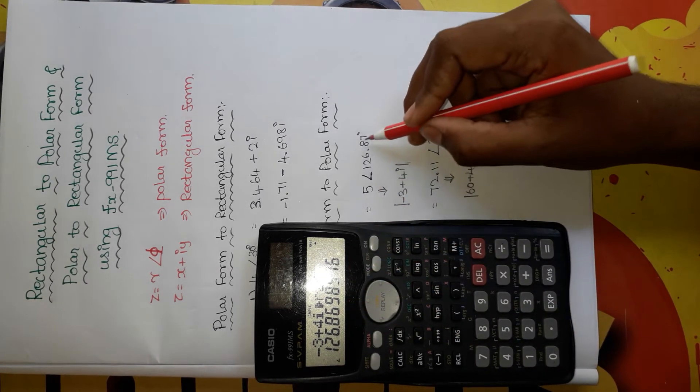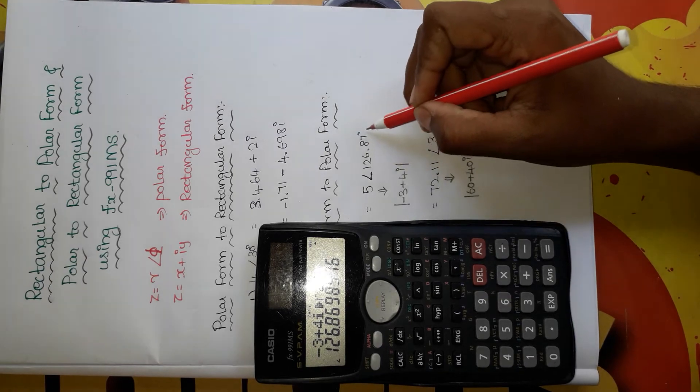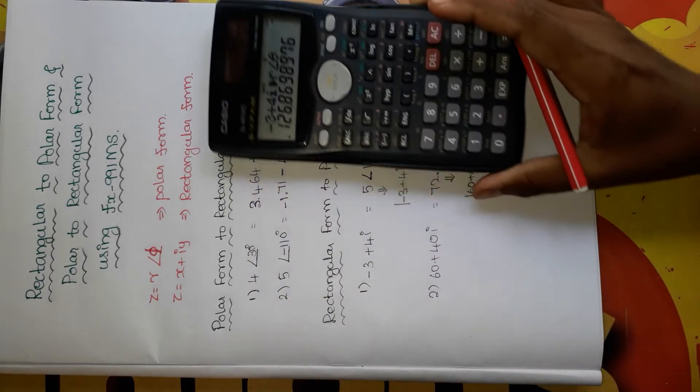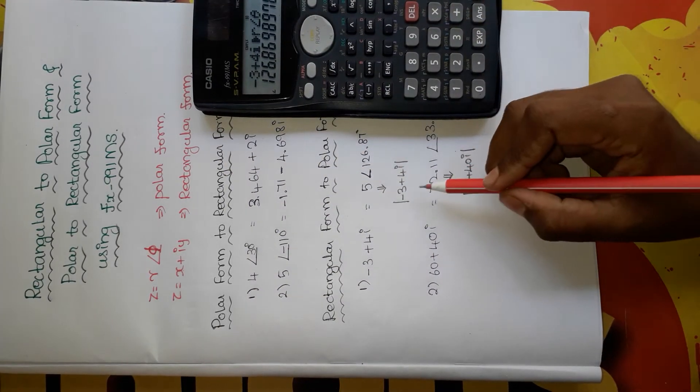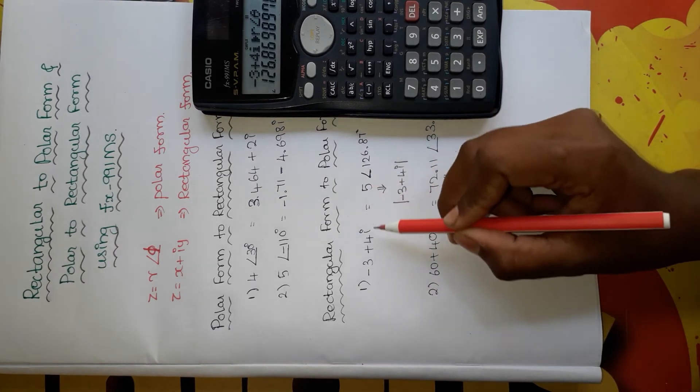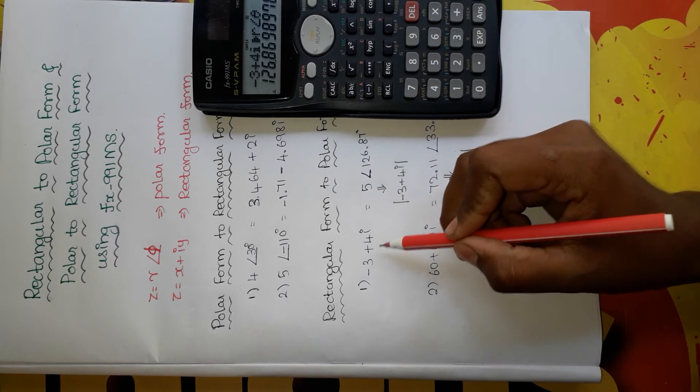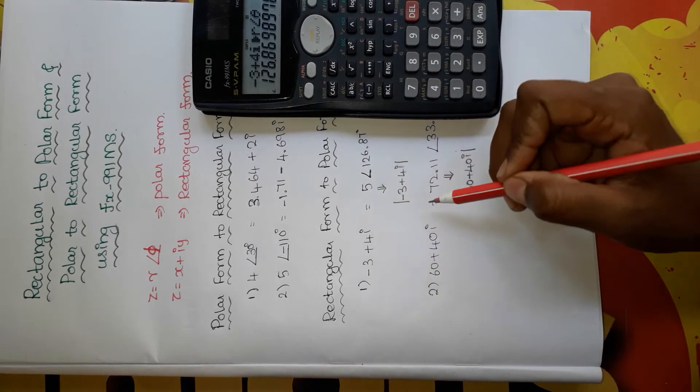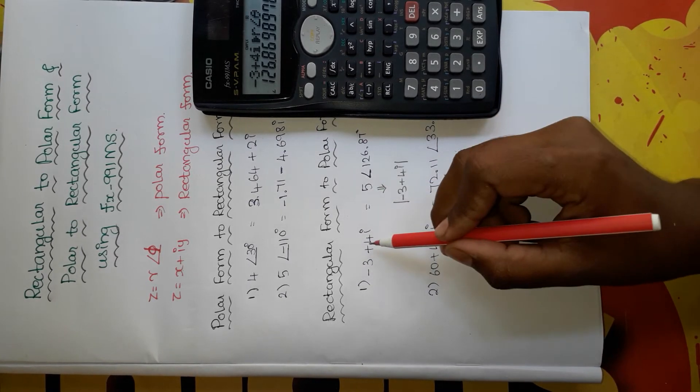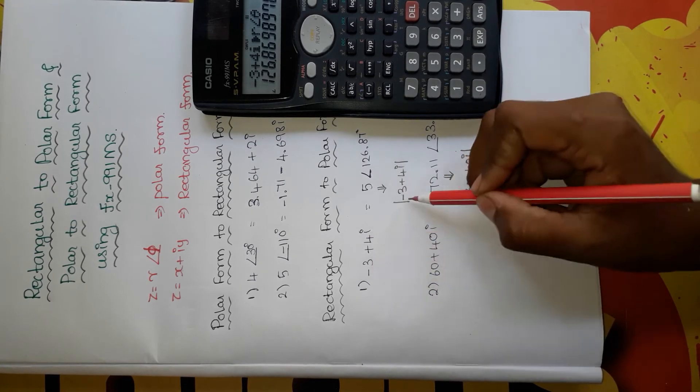I want to tell you one thing: this 5 is the magnitude of z, right? And we can also call it the modulus of this complex number. Both are the same, magnitude of this complex number as well as modulus of this complex number, both are the same.